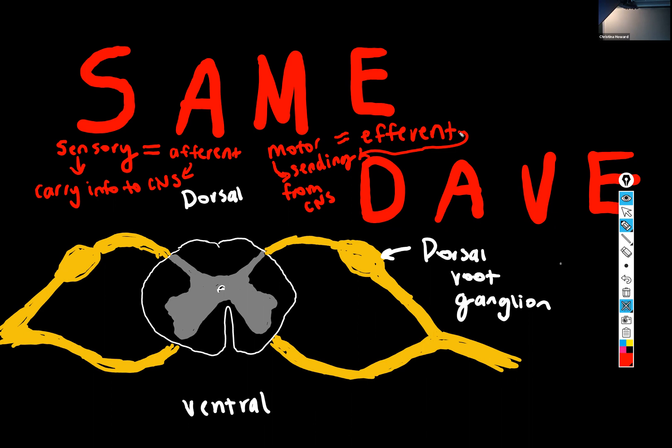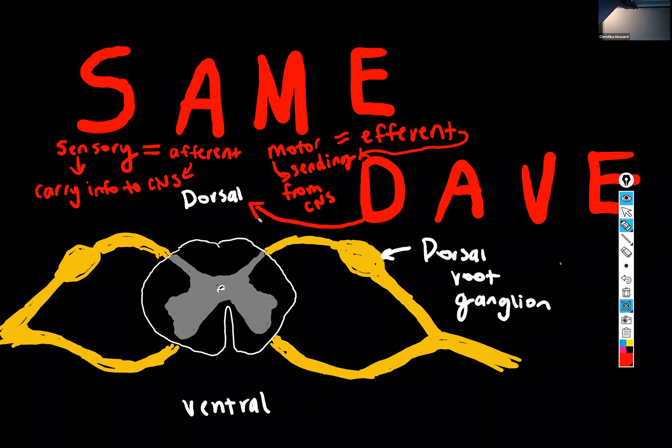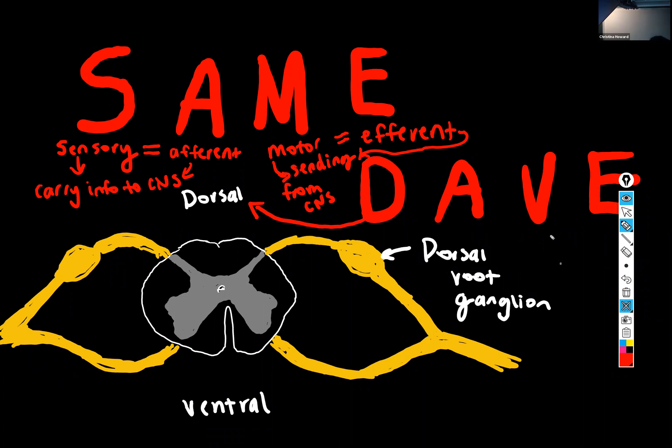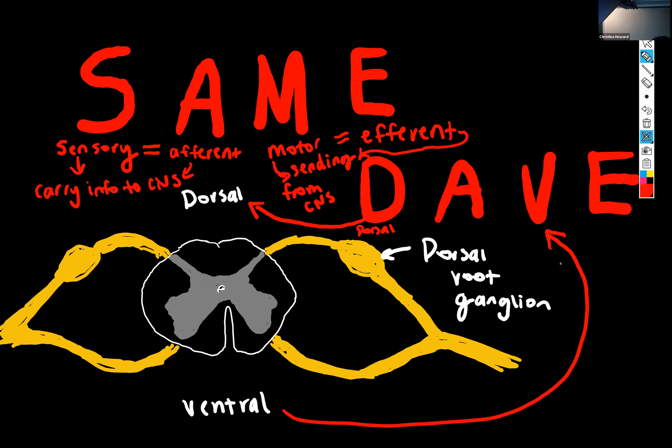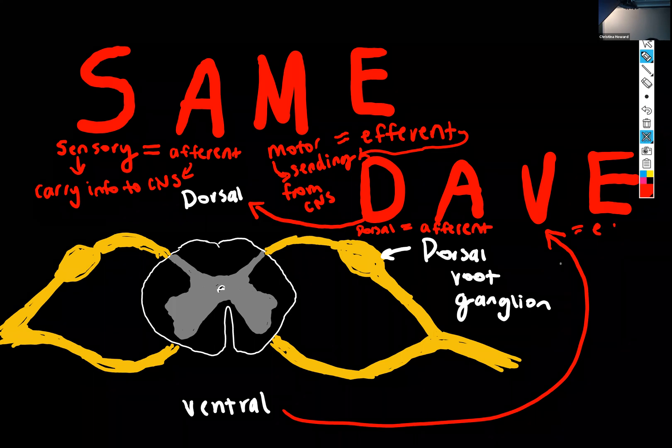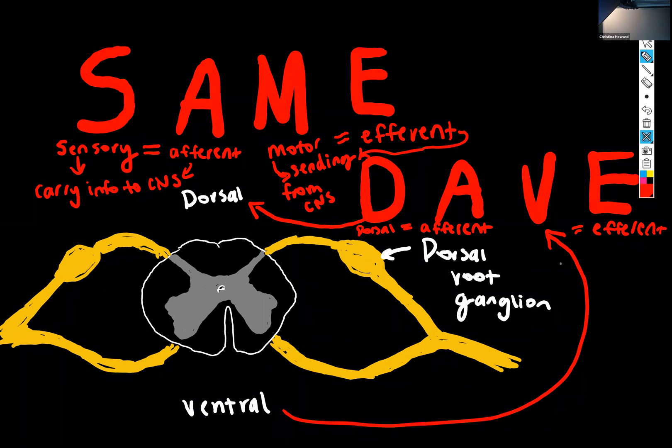So that's SAME. Now one of the major memory tasks of the spinal cord chapter is remembering the parts of the spinal cord and what they do. So this is where the acronym DAVE comes in. In DAVE, dorsal is the D and ventral is the V. Dorsal equals afferent and ventral equals efferent. This is telling you which portions of the spinal cord are responsible for carrying which kinds of information.